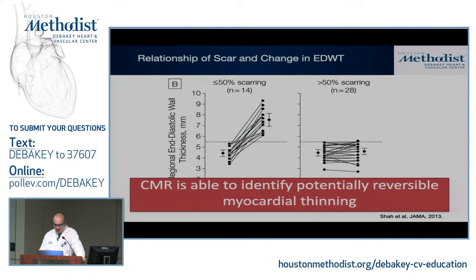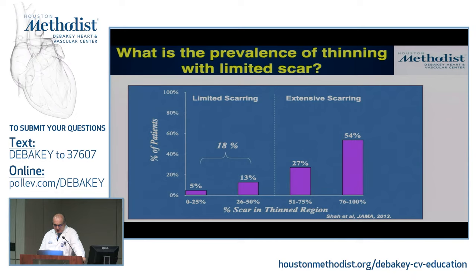CMR may be uniquely able to identify potentially reversible myocardial thinning. In a cohort of patients with ischemic heart disease, this occurred in about 18% of patients — limited scar despite having an area of wall thinning.